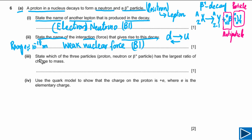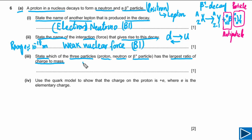For the next part, the question asks us to state which of the three particles — proton, neutron, and beta plus particle — has the largest ratio of charge to mass. Simply, it is asking which one has the greatest ratio of Q over M.